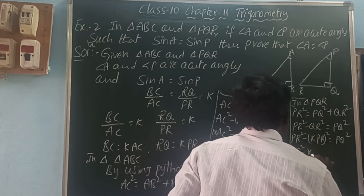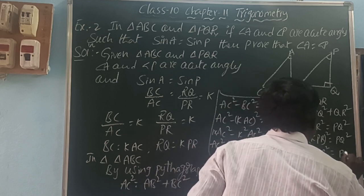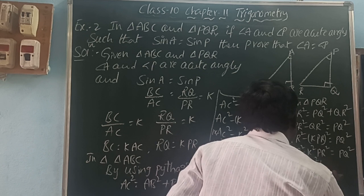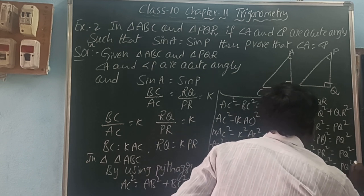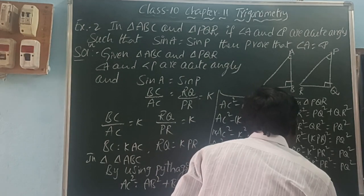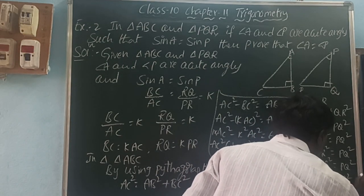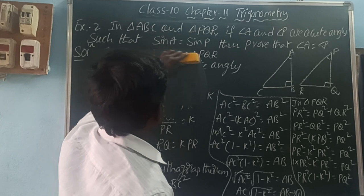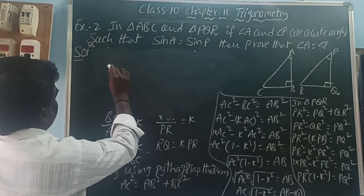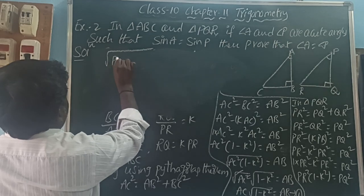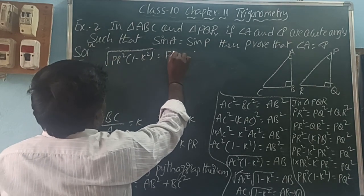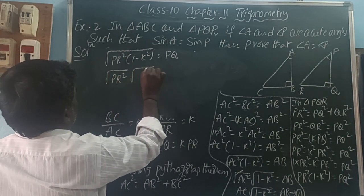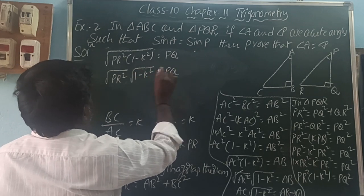Taking the square root: square root of PR²(1 minus k²) equals PQ. Using the product rule for square roots: square root of PR² times square root of (1 minus k²) equals PQ. The square and square root cancel, so PR·√(1 − k²) equals PQ. Now we have all three side ratios: BC equals k·AC, RQ equals k·PR, AB equals AC·√(1 − k²), and PQ equals PR·√(1 − k²).